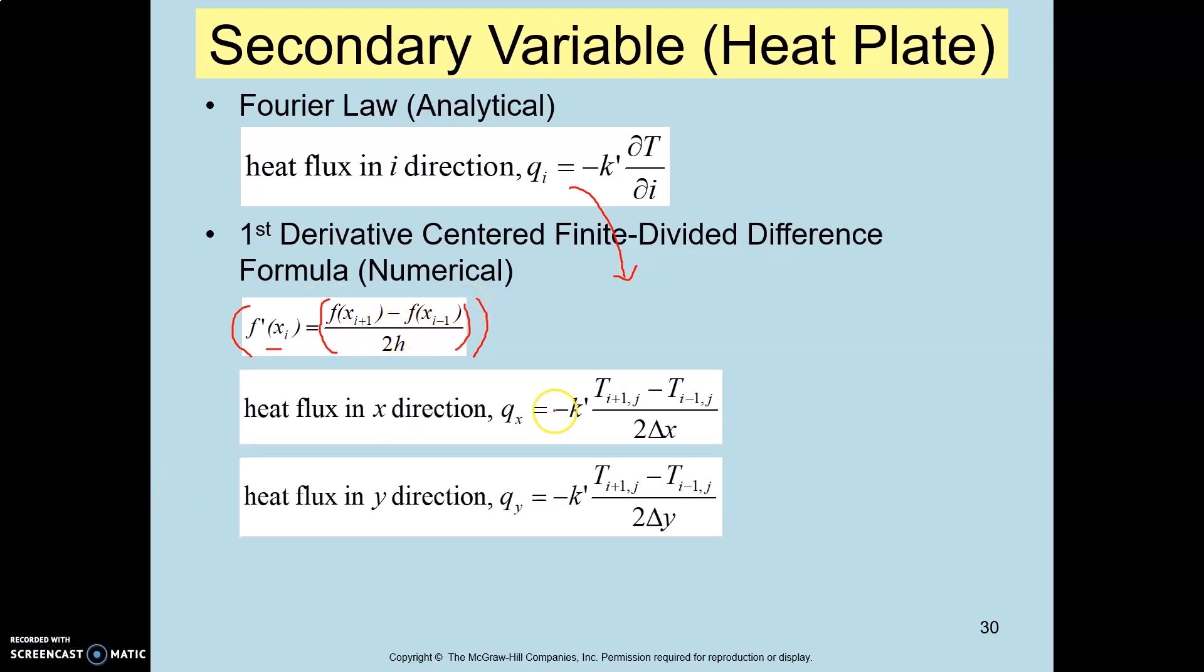To compute the heat flux in X axis, based on this formula, negative K prime remains. So what is the Delta T over Delta X? In this case we are going to compute the Delta T over Delta X, and for the Y direction we compute the Delta T over Delta Y.